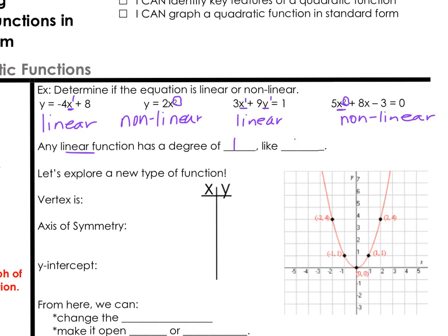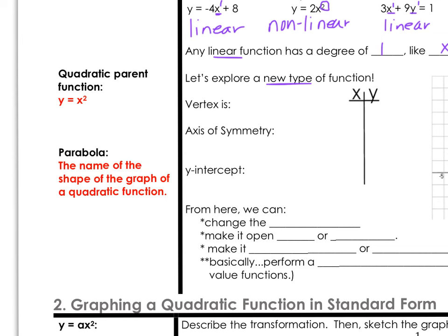So remember, any linear function has to have a degree of 1, like x to the first power. Well, in chapter 4 we're going to change all that and explore a new type of function. A quadratic function has a biggest exponent of 2 for your variable. Y equals x squared would be the quadratic parent function.